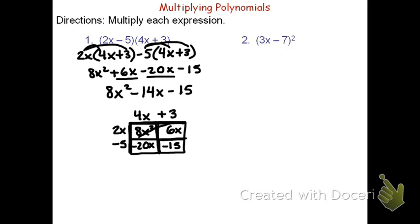These are my like terms. I'll add those together. Starting with the first piece, we have 8x squared; the 6x minus 20x is again negative 14x, and then lastly minus 15. Notice the answers match.